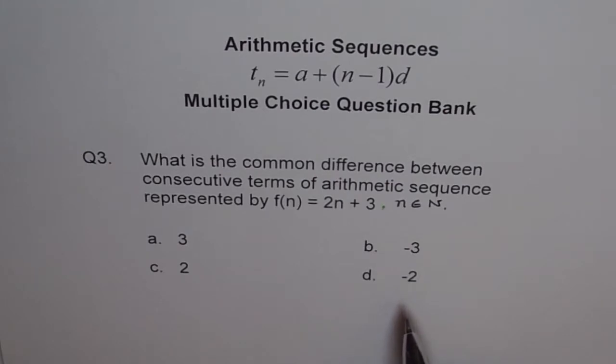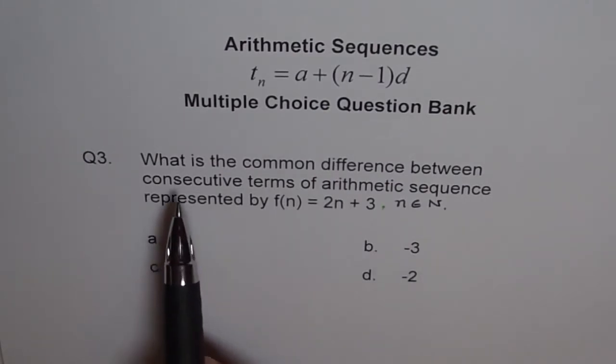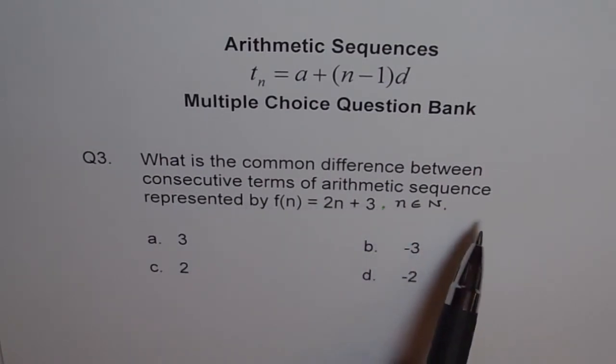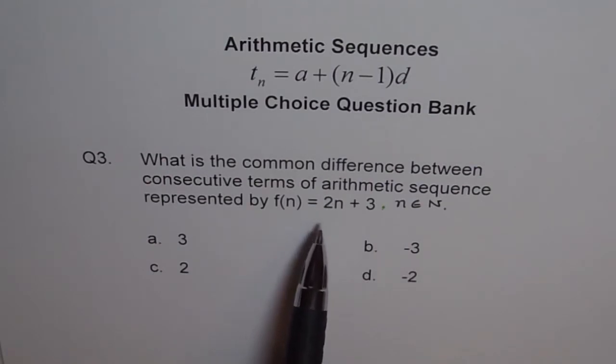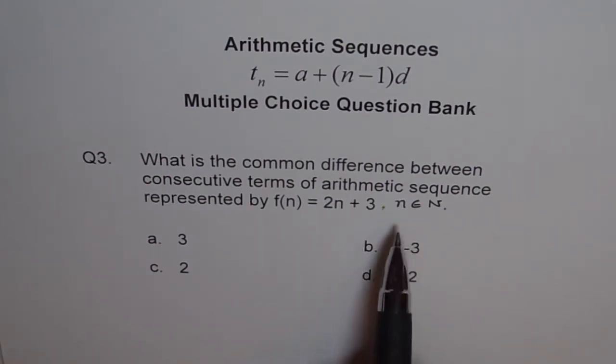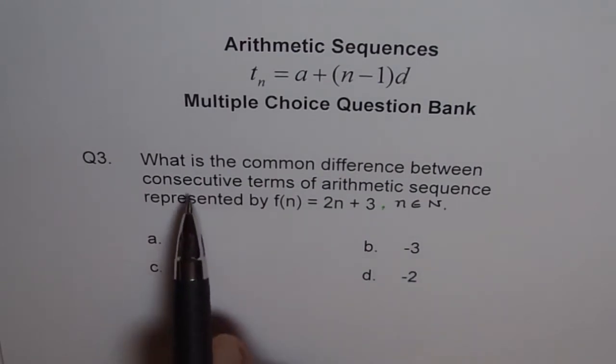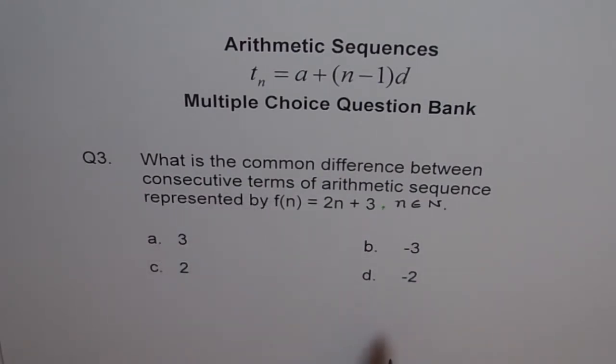Now, it is a very interesting question. What is the common difference between consecutive terms of arithmetic sequence represented by f of n equals 2n plus 3, where n belongs to natural numbers? Now, consecutive terms are the terms which come one after the other.